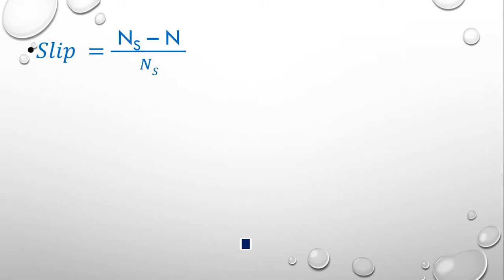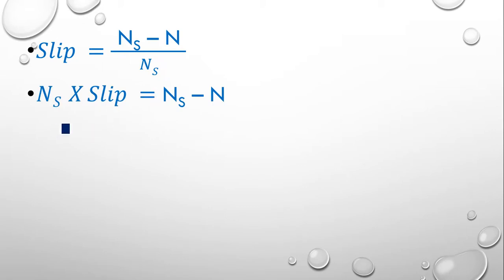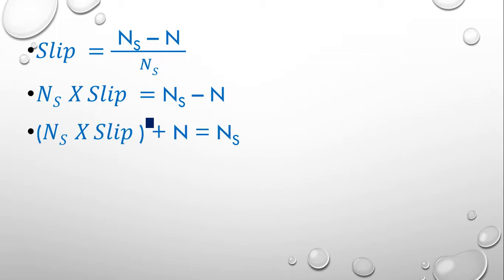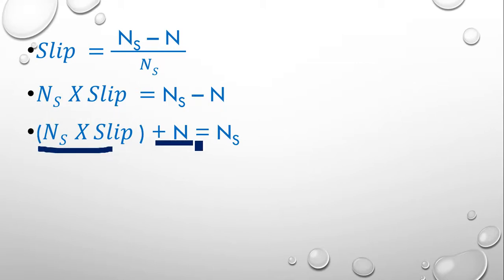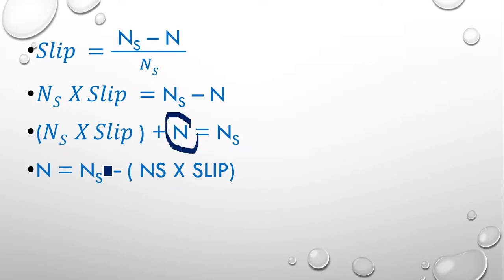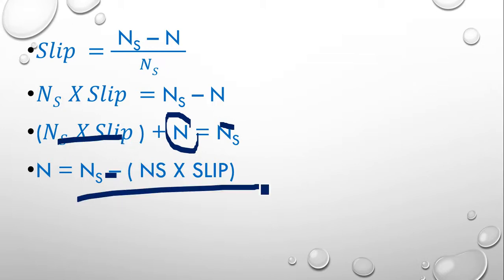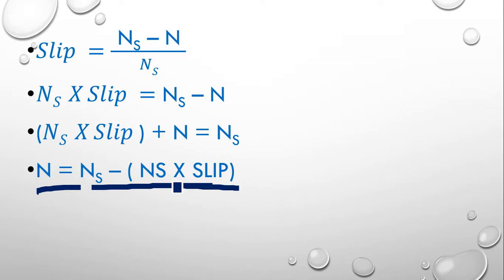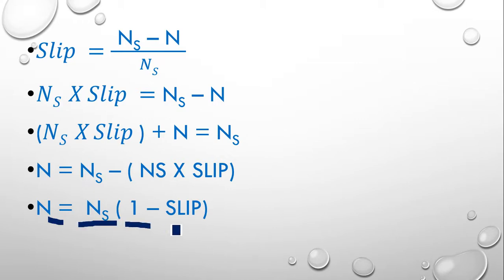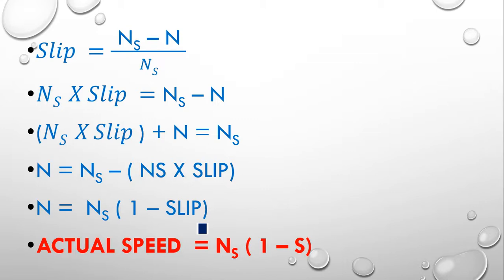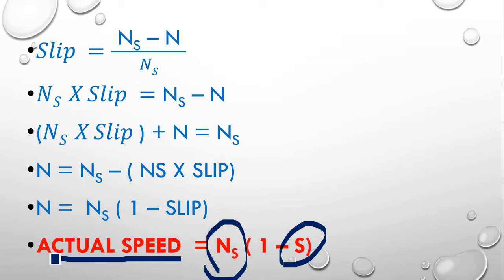We can derive an equation for actual speed from the slip equation. Starting from S = (N_s − N) / N_s, multiply both sides by N_s: N_s · S = N_s − N. Rearranging: N = N_s − N_s · S = N_s(1 − S). So actual rotor speed = N_s × (1 − S).